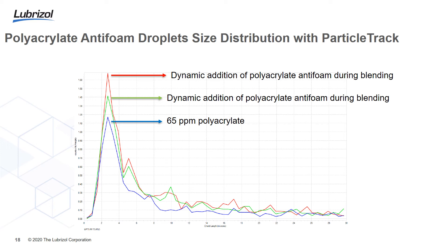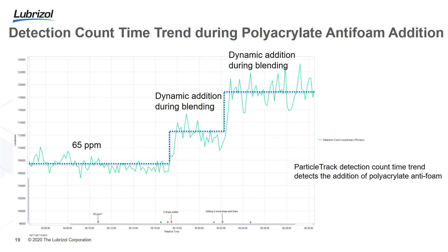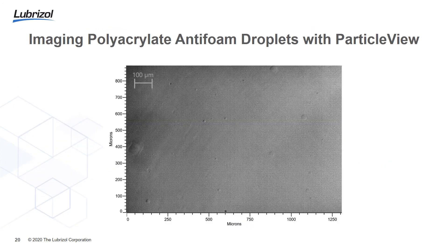In this example, we look at another class of anti-foam polymeric droplets: polyacrylates. It is typically much more difficult to detect polyacrylates in oil due to the lower refractive index difference between oil and polymer, and due to their low concentration. Nevertheless, we were able to measure the size distribution of 65 ppm polyacrylate anti-foam droplets. We also introduced more polyacrylates under dynamic conditions and observed an immediate increase in count number. ParticleTrack can detect count-time trends during dynamic blending, and ParticleView can visualize even these polyacrylate anti-foam droplets.